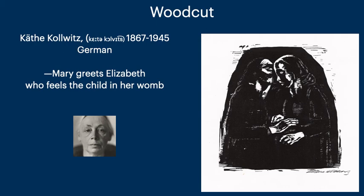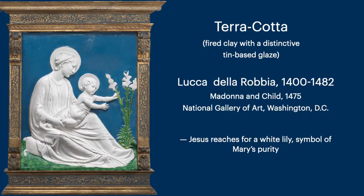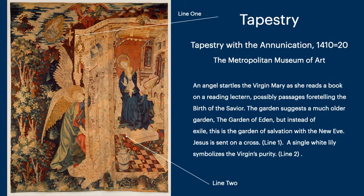And then we have Käthe Kollwitz, German — here in this woodcut we have Mary greeting Elizabeth, who feels the child in Mary's womb. Taking a big leap backwards, we have terracotta by Luca della Robbia — here Jesus reaches for a white lily, a symbol of Mary's purity. The tapestry takes a little bit of an explanation. An angel startles the Virgin Mary as she reads a book, possibly foretelling the birth of the Savior. The garden suggests a much older garden — the Garden of Eden — but instead of exile, we have the Garden of Salvation with the New Eve. There's a single white lily symbolizing the virginity's purity.